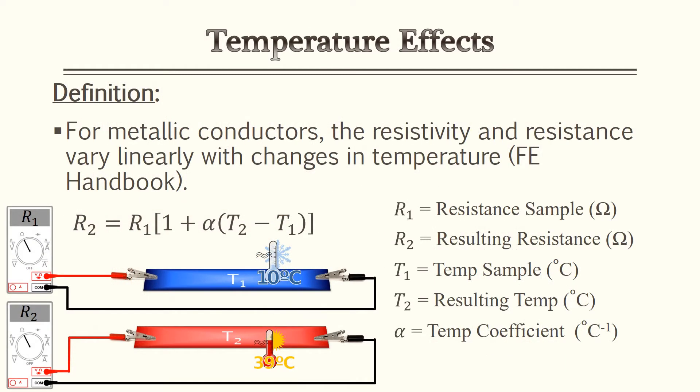The last element to be aware of is how temperature affects conductors. For metallic conductors, the resistivity and resistance vary linearly with changes in temperature, as stated in the FE handbook. So if you have a cold bus bar or conductor, it's going to have a very low resistance, which means it's going to conduct current very well. As you raise that temperature, the resistance will grow, which means it will conduct current not as well.